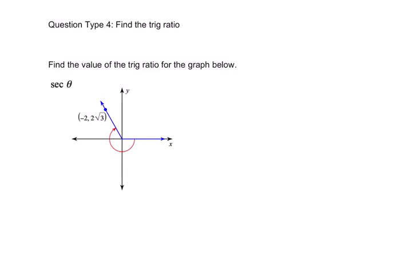Take a moment, try this problem out, and then press play when you're ready to solve it with me. So this tells us to find the value of the trig ratio for the graph below. This is our trig ratio, the secant of theta. We're trying to find the secant of theta. I'm going to highlight that.